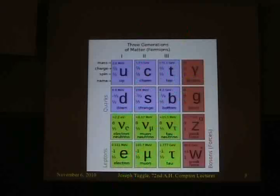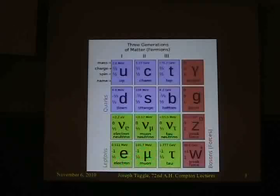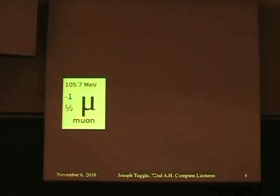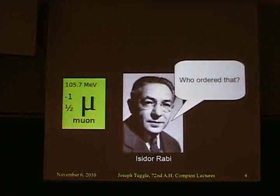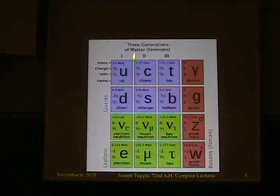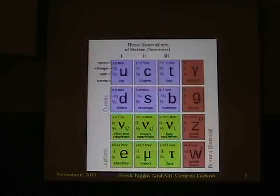This problem goes back even further than this model. It started with the discovery of the muon — a heavier version of the electron with the same electric charge and same other properties, just heavier. It was discovered in the mid to late 1930s, and it led physicist Isidore Rabi to ask 'who ordered that?' It was completely unexpected. That discovery led to the second generation of matter, and then in the 1970s we started getting evidence for a third generation.